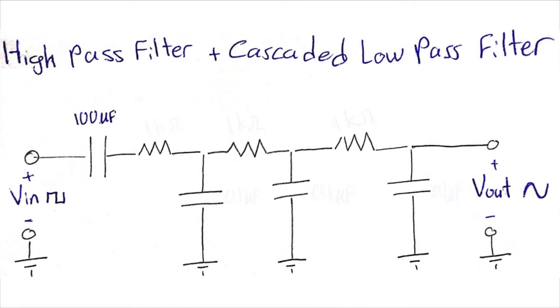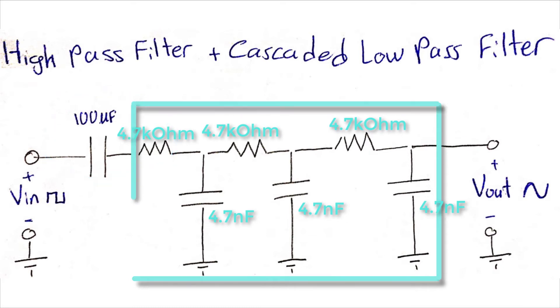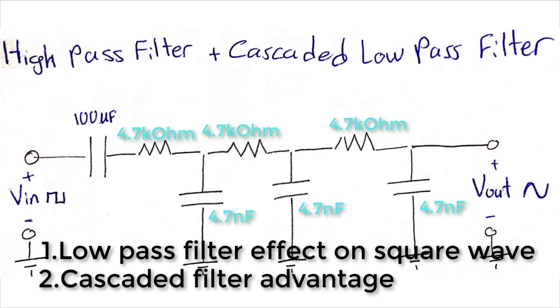For the sake of demonstration, I've combined a high-pass filter with cascaded low-pass filters to form a band-pass filter. But hold on! What would a low-pass filter do to a square wave signal? And why would I build a cascaded low-pass filter network? Well, let me tell you by answering the first question first.